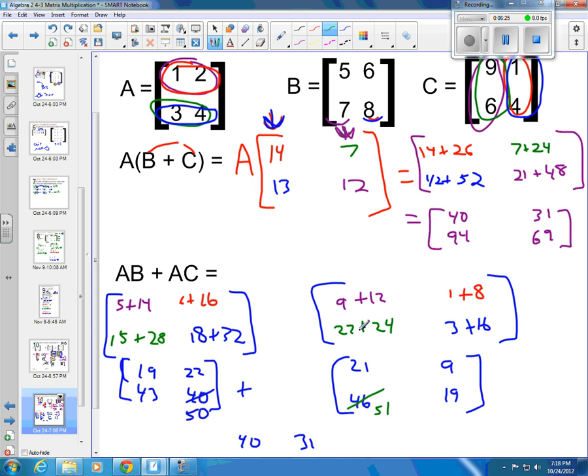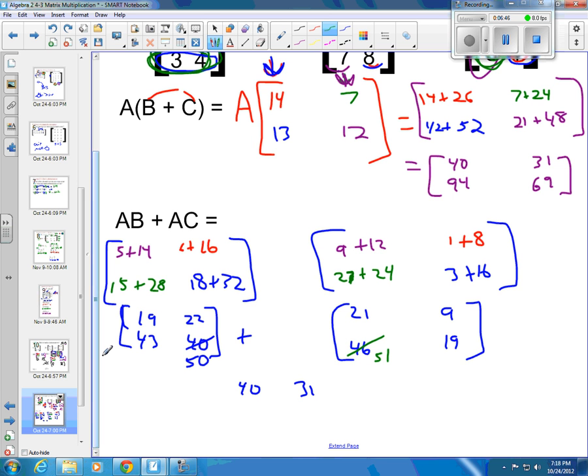So that one was A times C. That's second row times first column. So second row A times C, that's this one. So that's 3 times 9 is, oh, that's a 27. I'm fine, I just can't read my own writing. So 27 would give me 51. So whenever I add those up now, the 19 plus the 21 is 40, the 22 plus the 9 is 31, 43 plus 51 is in fact 94 the way it's supposed to be, and 50 plus 19 is 69. And it does work out. Matrix multiplication with the distributive property does work.